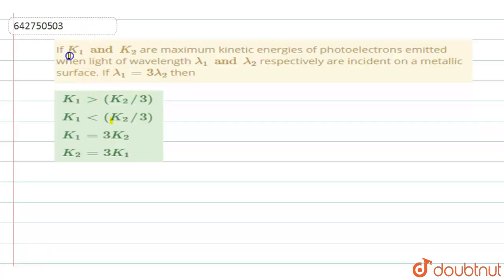If K1 and K2 are the maximum kinetic energies of the photoelectrons emitted when light of wavelength lambda 1 and lambda 2 respectively are incident on a metal surface, if lambda 1 equals 3 lambda 2, then which of these among 4 conditions will be satisfied for kinetic energy? So when they are asking with respect to the kinetic energy and wavelength, we have to go back to the Einstein's photoelectric equation.